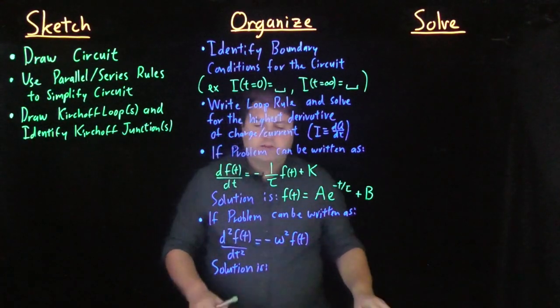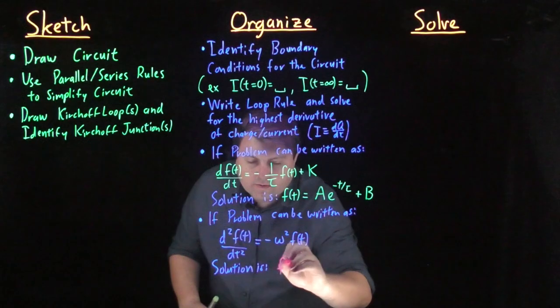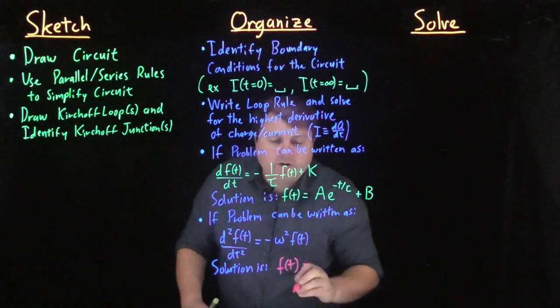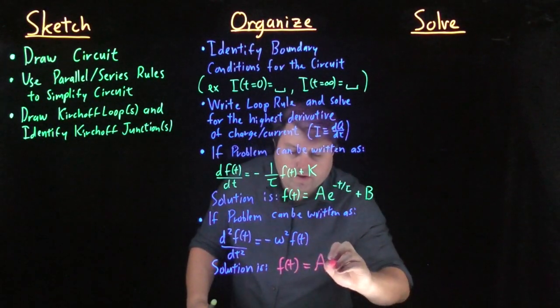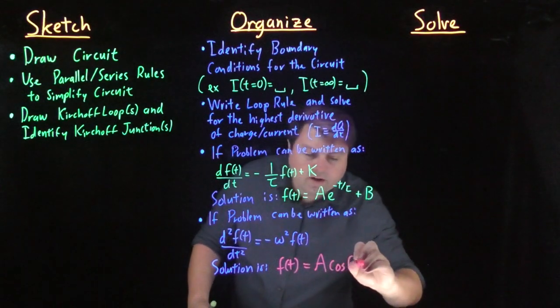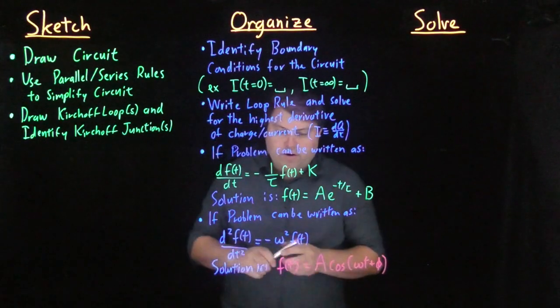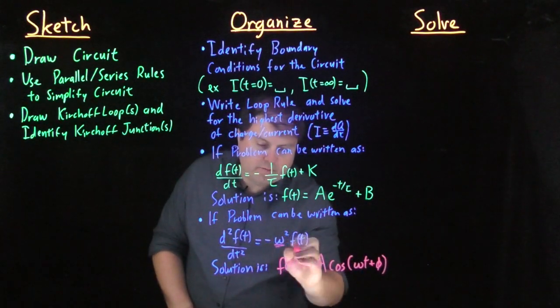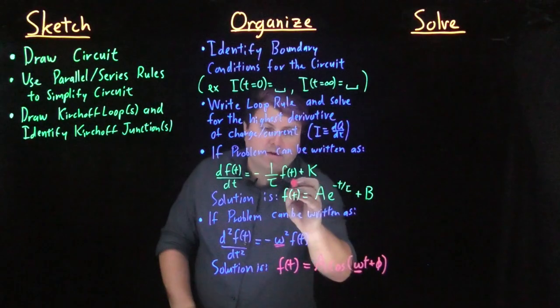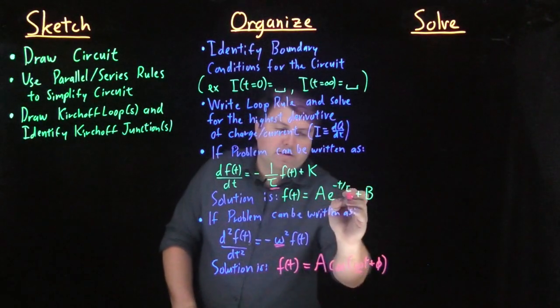Then our solution is sinusoidal, or very often we use cosinusoidal, so a cosine of omega t plus phi. Notice that we have this omega goes to this omega, this tau goes to this tau.